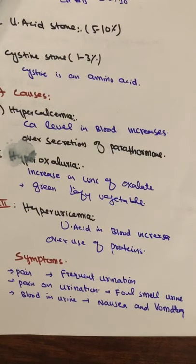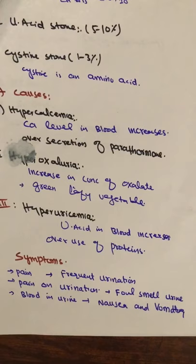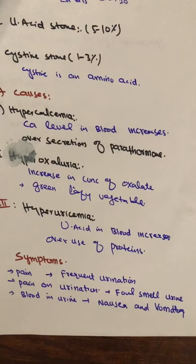Oxalate is more commonly found in green leafy vegetables, for example spinach and other green leafy vegetables. If the concentration of oxalate in our blood becomes too high, and the kidney's elimination process is insufficient, these compounds get deposited. This condition also contributes to hyperuricemia, which is another cause of kidney stones.